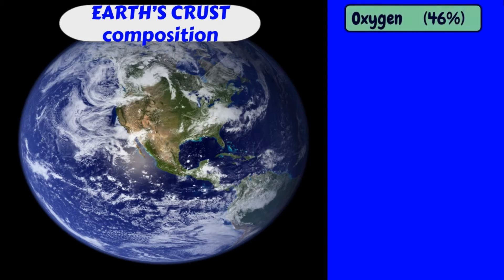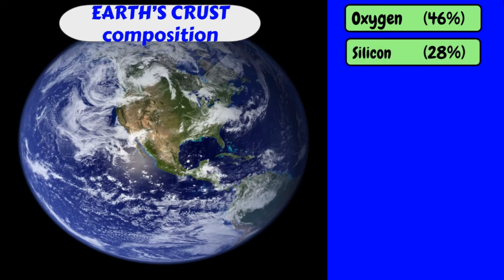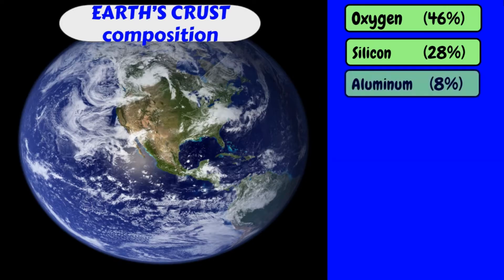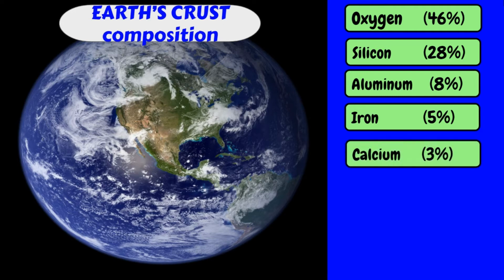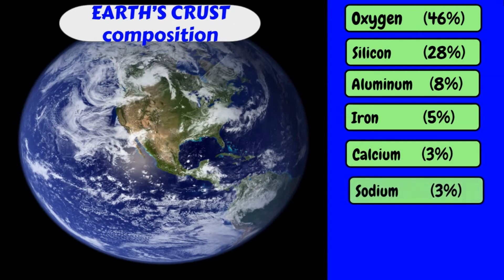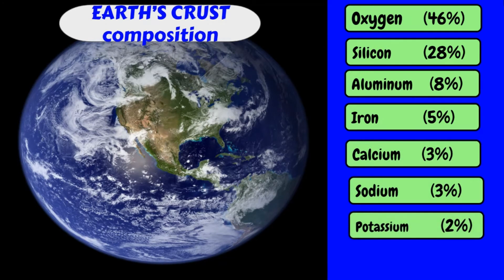Our Earth's crust is made up of several elements such as 46% oxygen, 28% silicon, 8% aluminum, 5% iron, 3% calcium, 3% sodium, 2% potassium, and others are 5%.